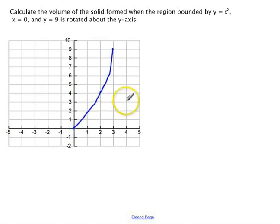And we're going to do the volume of the solid rotated around the y-axis bounded by the line y equals 9, x equals 0, which is the y-axis, and y equals x squared. So it's this area in here. When I rotate that around, it's going to look like this.